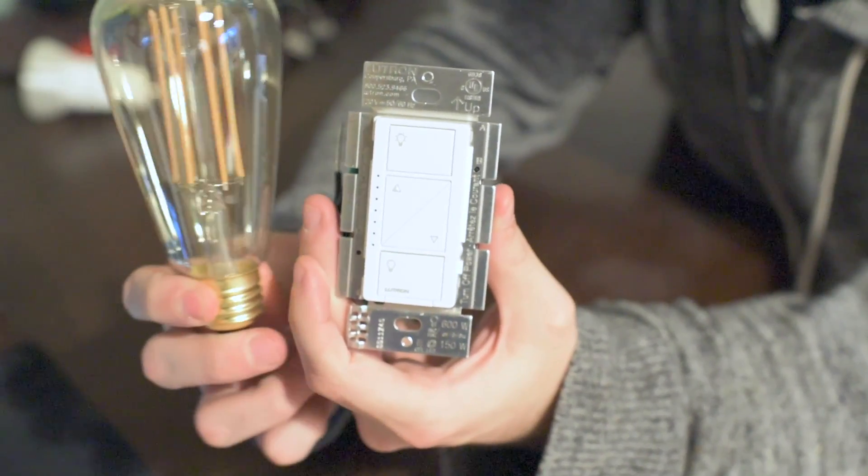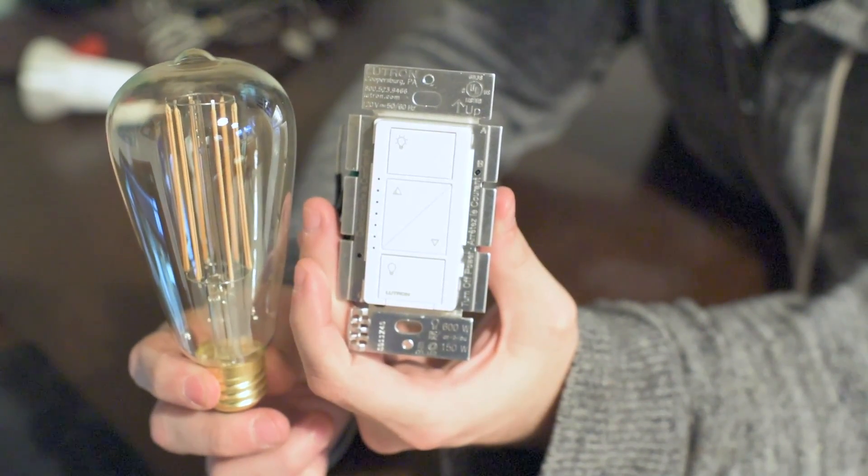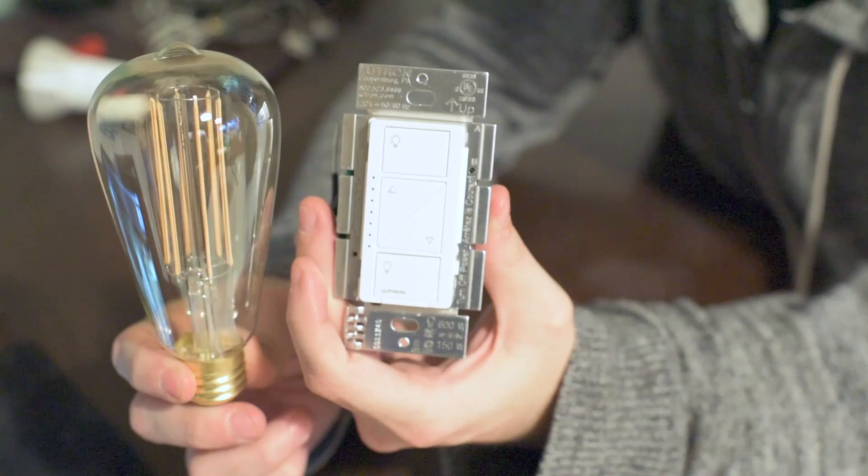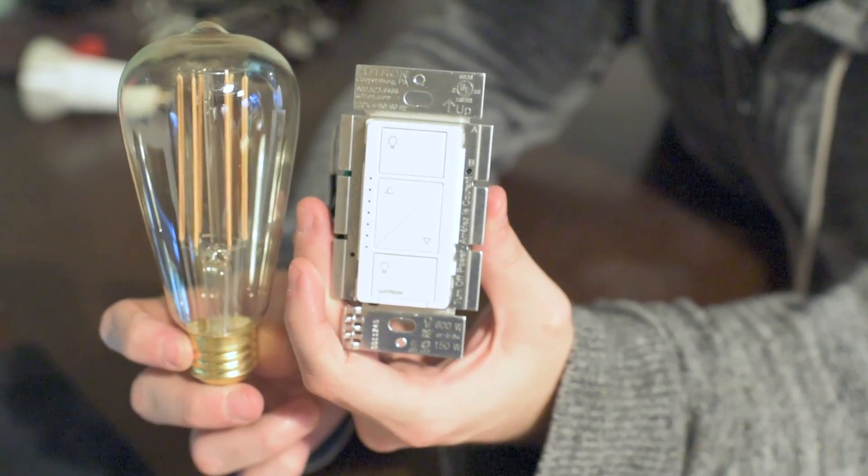So we're going to try this Lutron dimmer with the Edison bulb and see what happens.